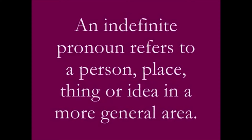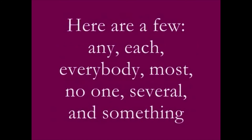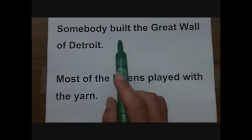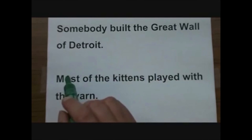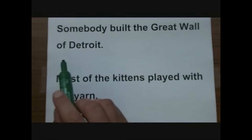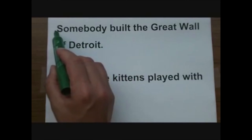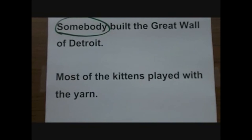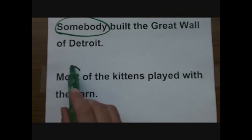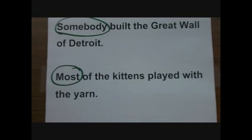An indefinite pronoun refers to a person, place, thing, or idea in a more general way. There's a long list of these, but here are a few: any, each, everybody, most, no one, several, and something. For example: 'Somebody built the Great Wall of China.' If we had said 'Bill built the Great Wall of China,' it would be obvious that Bill is the subject. Just because it's an indefinite pronoun shouldn't confuse you. 'Most of the kittens played with the yarn' — 'most' is the indefinite pronoun, a nonspecific number.